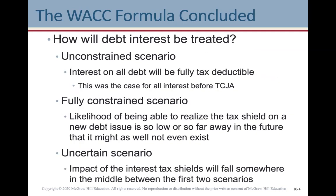In terms of debt interest using WACC — from a US perspective; Canada is more straightforward — there are three scenarios. The unconstrained scenario is where interest on all debt is fully tax deductible, as was the case before the Tax Cuts and Jobs Act of 2017. Under the fully constrained scenario, the likelihood of realizing a tax shield on new debt is so low that it might as well not exist. Under an uncertain scenario, the impact of interest tax shields falls somewhere in the middle.